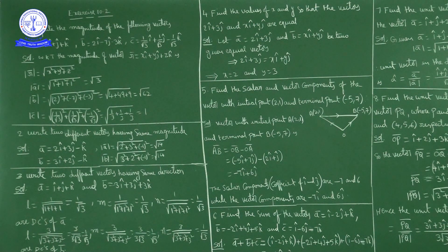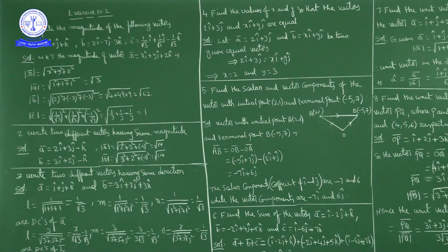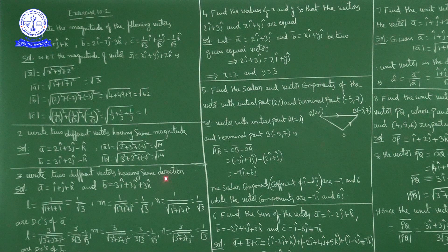To write two vectors of the same magnitude, take one vector a̅ and change the order of the coefficients of î, ĵ, k̂ for the second vector — the magnitude will remain the same. Next, write two different vectors having the same direction. Same direction means their direction ratios must be the same.